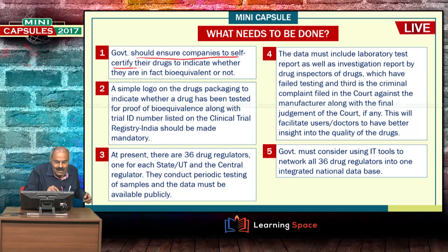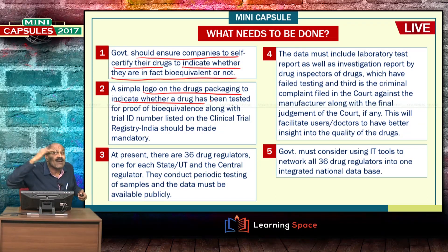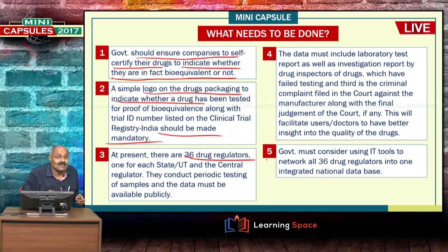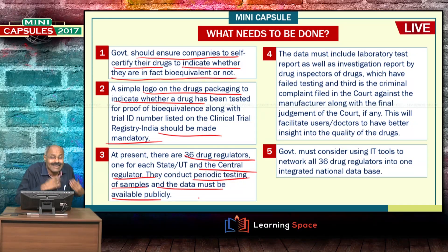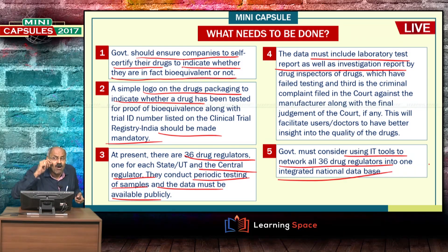The government must ensure companies self-certify their drugs to indicate whether they are in fact bioequivalent. A simple logo on the drug's packaging should indicate whether a drug has been tested for proof of bioequivalence, along with an identification number listed on the Clinical Trial Registry India, and this should be made mandatory. There are 36 drug regulators along with the central regulator conducting periodic testing of samples, and the data — including laboratory test reports and investigation reports by drug inspectors — must be available publicly. The government must also use information technology tools to network all 36 drug regulators into one integrated national database.